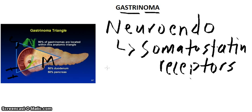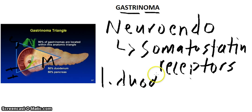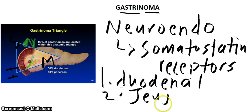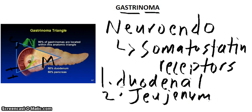This leads to duodenal ulcers, and something very diagnostic is that if you have duodenal ulcers — especially distal duodenal ulcers — that is really diagnostic of a gastrinoma.